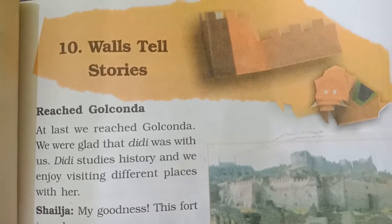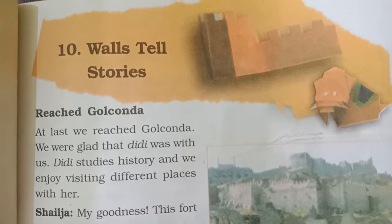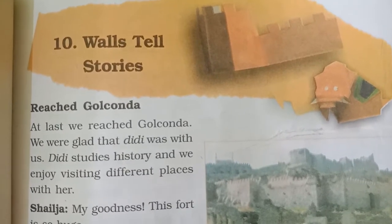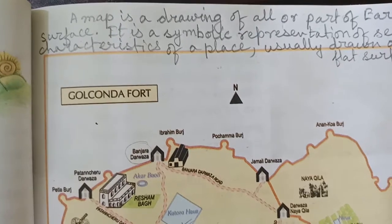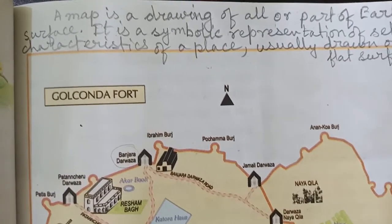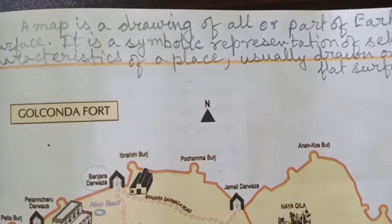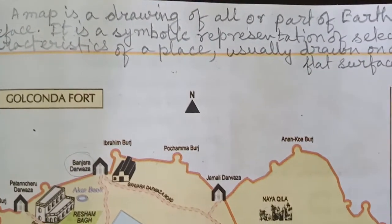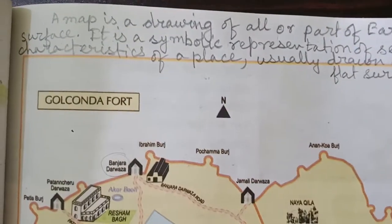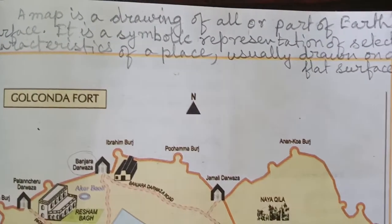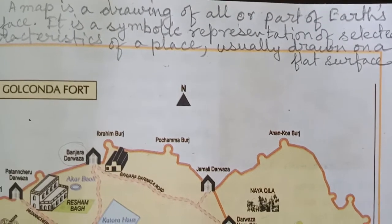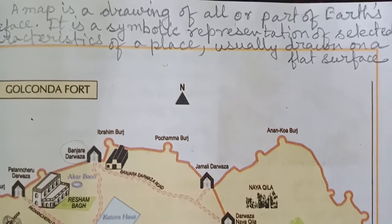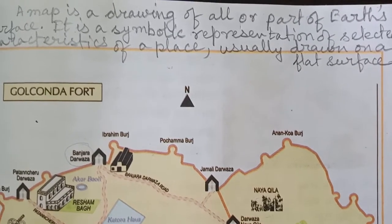Today we will learn how to read a map, discussing the chapter 'Walls Tell Stories.' A map is a drawing of all or part of Earth's surface. It is a symbolic representation of selected characteristics of a place, usually drawn on a flat surface. There are different types of maps.